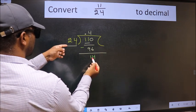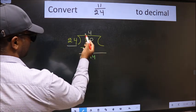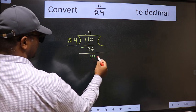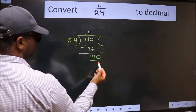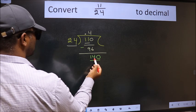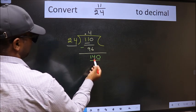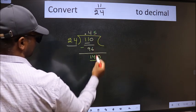14 is smaller than 24 and we already have the decimal, so directly take 0. So 140. A number close to 140 in 24 table is 24 fives, 120.